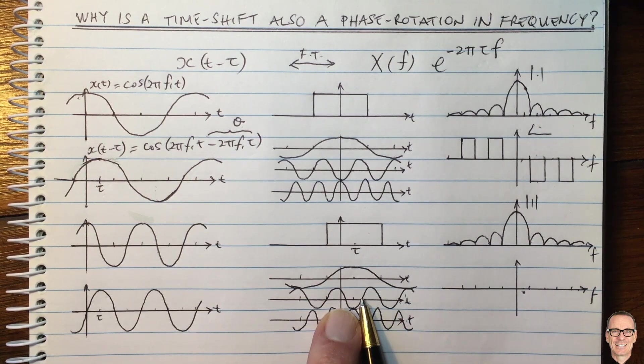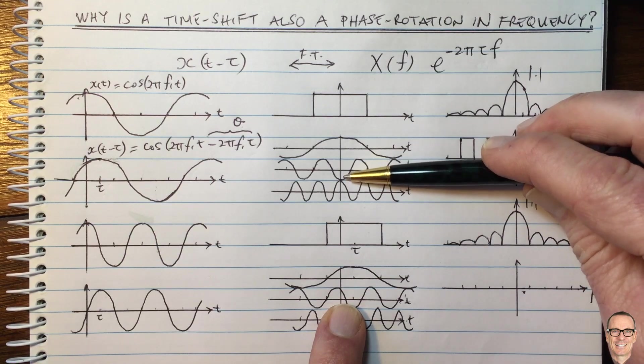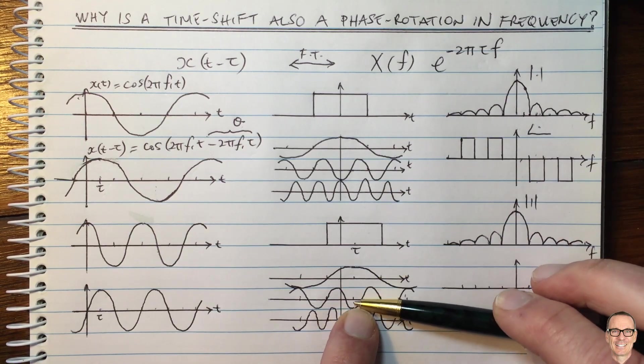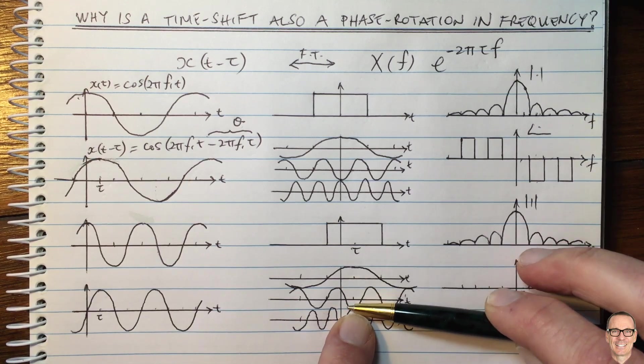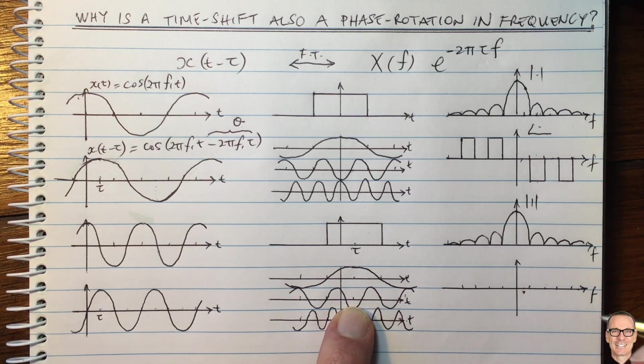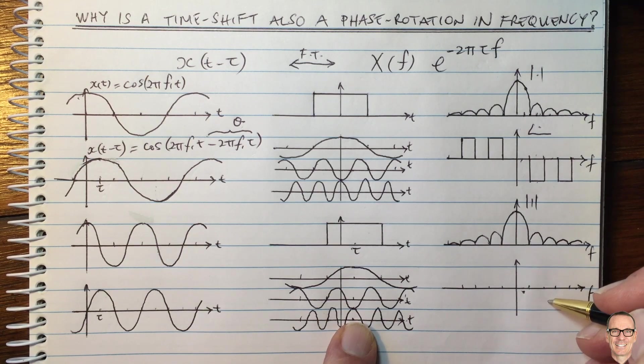This one here is going to have a bigger phase shift. It was already 180 degrees phase shifted, but now it's 180 degrees with an extra phase shift because of this time shift, which is a function of its frequency. And here it's going to be again back to the zero phase, but now not zero anymore, a much larger phase shift.